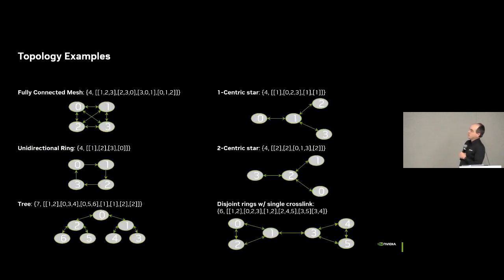In the top left corner, we have what's called a fully connected mesh. You have a four node topology where every instance is connected to every other instance. In the bottom left corner, you have a representation of a binary tree topology. And in the bottom right corner, you have a disjoint ring with a single crosslink. This could be used to represent two nodes with three instances on each node with a single instance that can communicate between nodes.